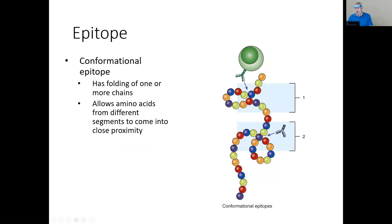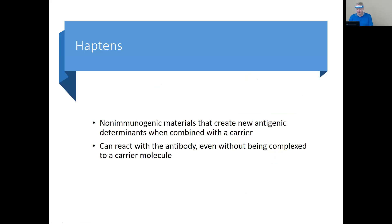A conformational epitope involves amino acids and proteins that swing around and bind, making their structure. We can see a B cell or IgG coming in to find a binding spot on the antigen itself.